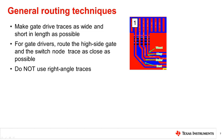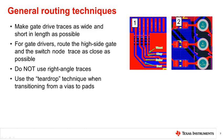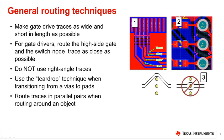Do not use right angle traces as they can cause electromagnetic interference issues — image 1 shows examples of different trace angles ranked from best to worst. When possible, always use the teardrop technique when transitioning from vias to pads or from a thin to a thick trace, as teardrops reduce the thermal stress of the signal transition. Route traces in parallel pairs, otherwise known as differential pairs, when routing around an object. For example, when routing signals from the current sense amplifiers, keep the traces as close together as possible to avoid any differential impedance and discontinuity caused by split traces.